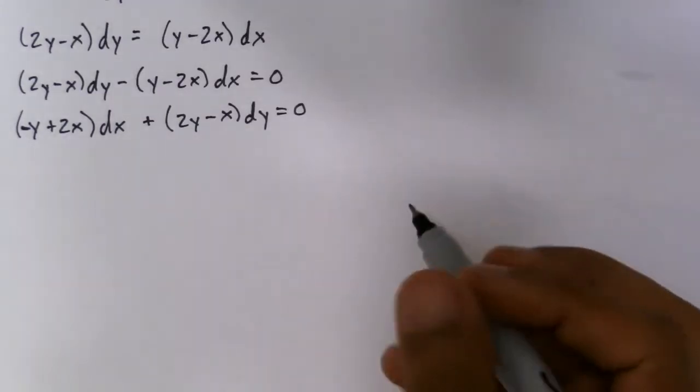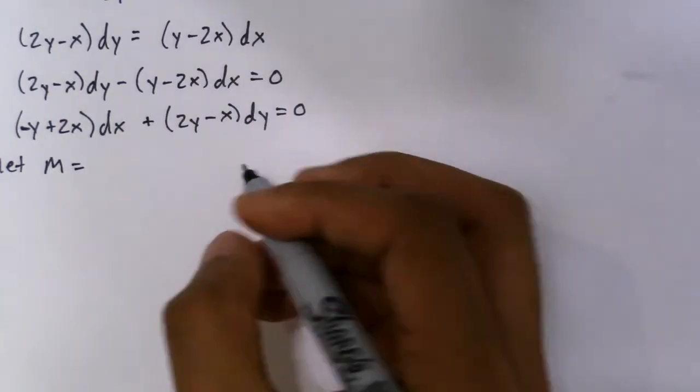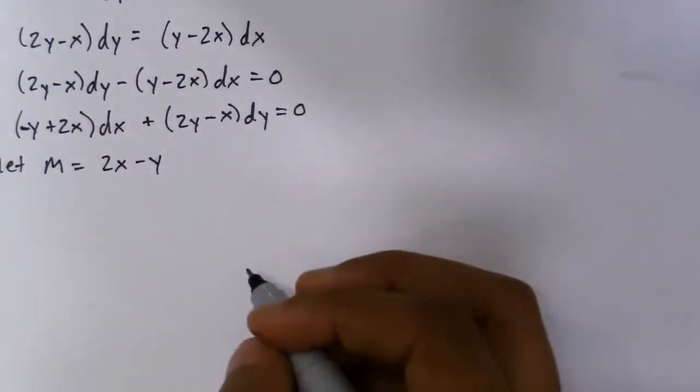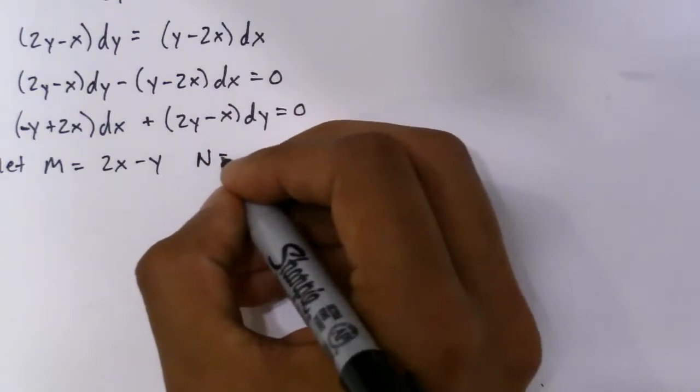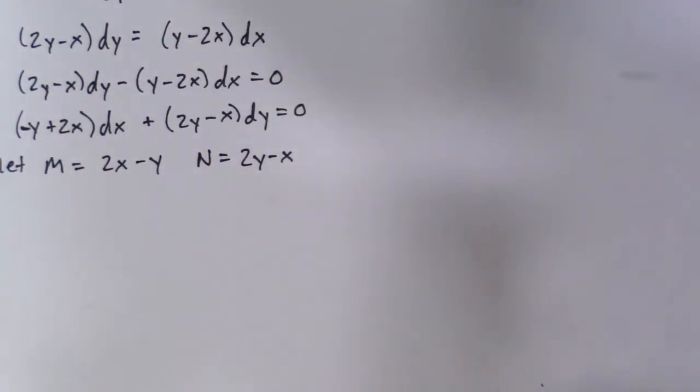So what I'm going to do, I'm going to let M equal this part. So 2x minus y, and I'm going to let N equal 2y minus x. Simple enough.